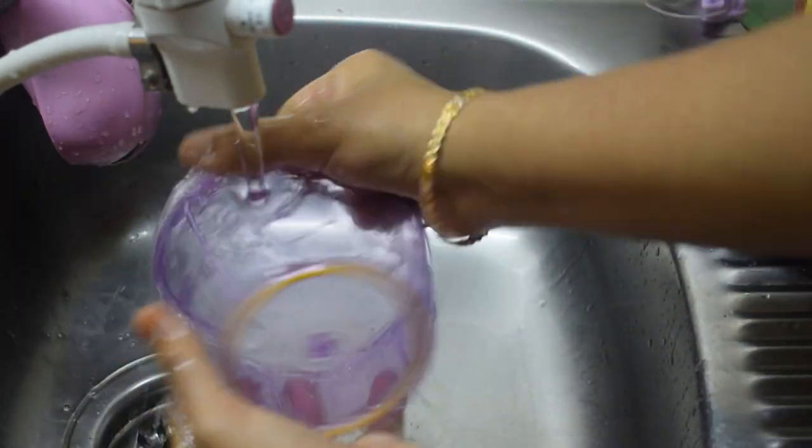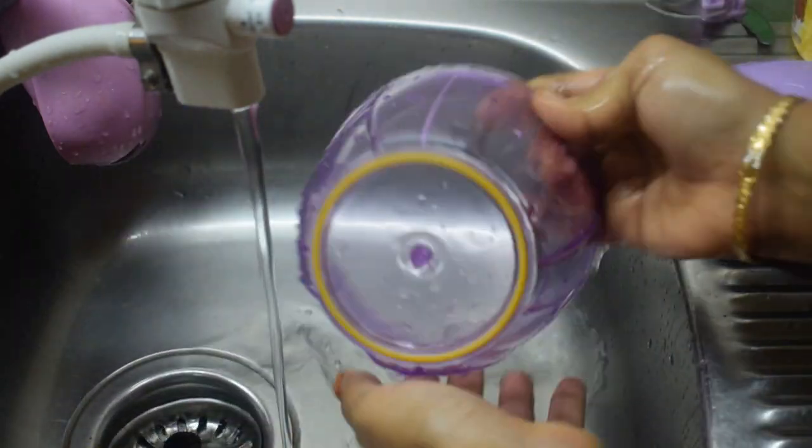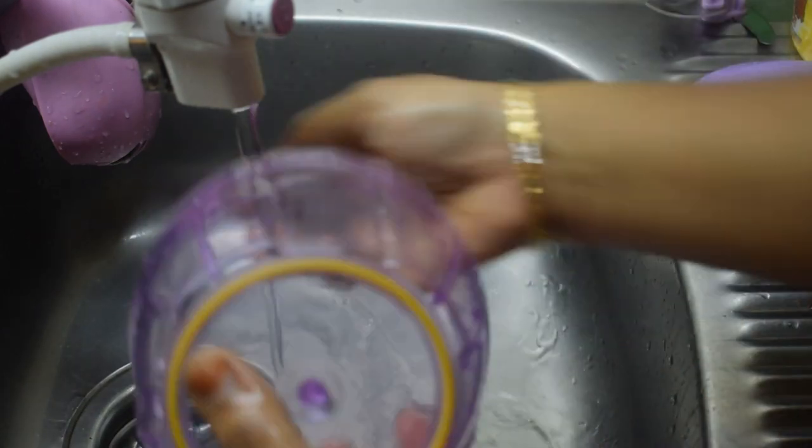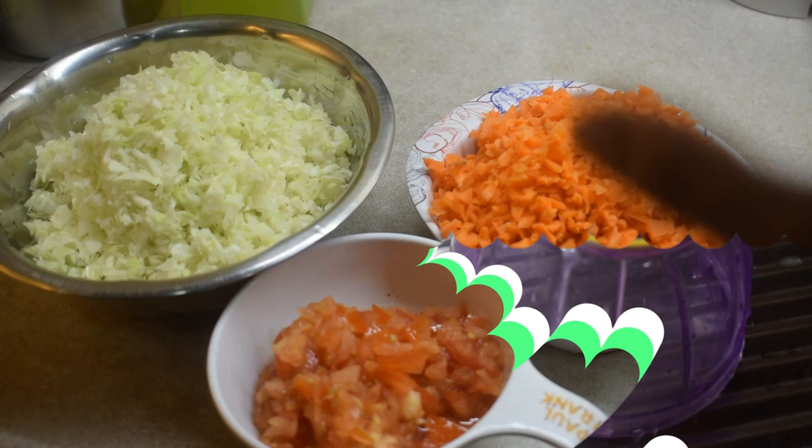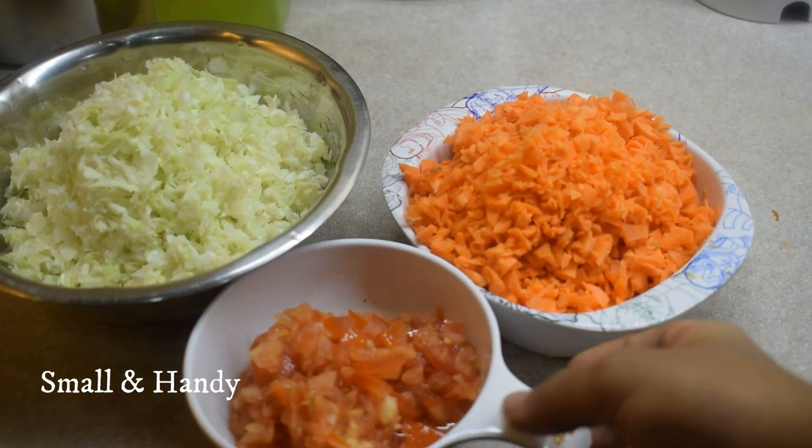The blade is very sharp. If you don't want to cut your hands, you can put cloth on it while washing. In a few minutes, we are ready with cabbage and carrot chopped.